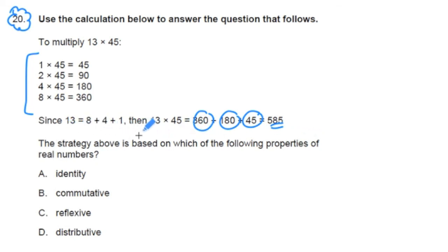The strategy above is based on which of the following properties of real numbers. And we have some of our real number properties here involving real property identities, the commutative property, the reflective property, the distributive property.